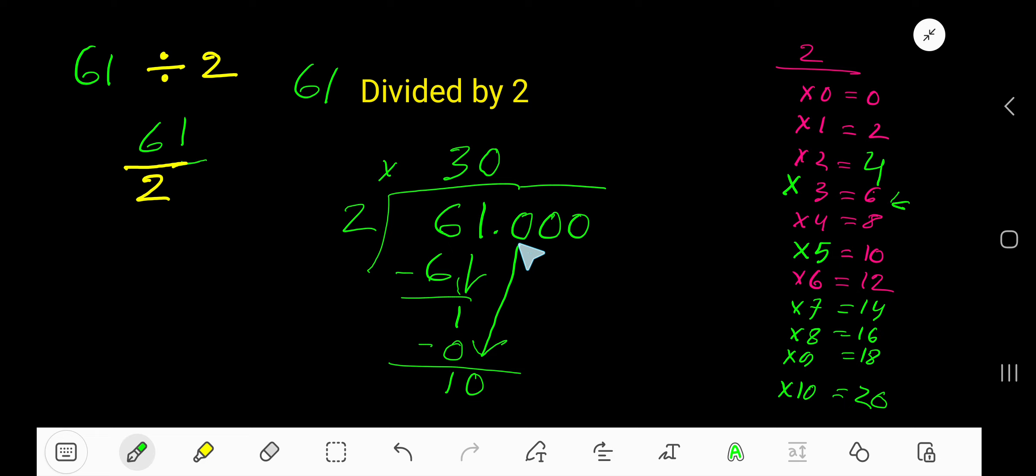Bring down the first 0, but before this 0, there is a decimal. Decimal must come to the question directly.